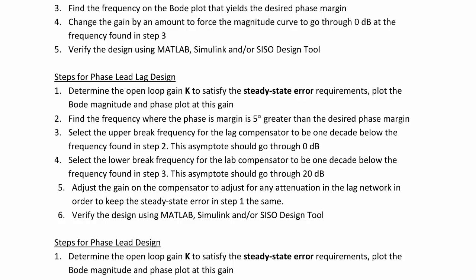and this asymptote should go through 0 decibels. Select the lower break frequency for the lag compensator to be 1 decade below the frequency found in step 3, and this asymptote should go through 20 decibels. Adjust the gain on the compensator to adjust for any attenuation in the lag network in order to keep the steady state error in step 1 the same. Finally, verify the design by using MATLAB, Simulink and/or SISO design tool.